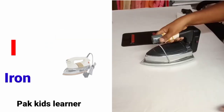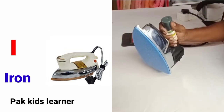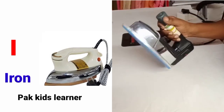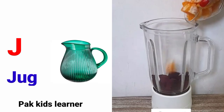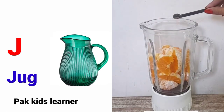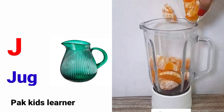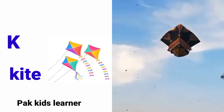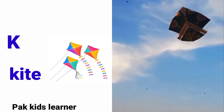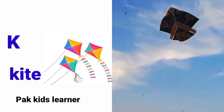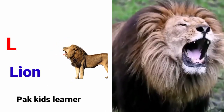I for Iron. J for Jug. K for Kite. L for Lion.